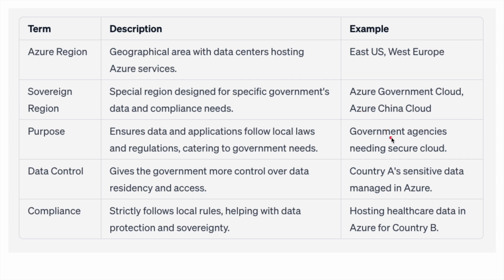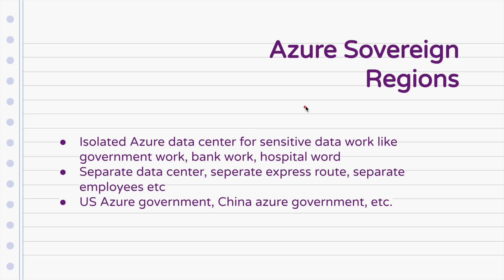This is for government agencies that need a secure cloud — maybe the FBI, the New York police department, Indian security services and whatnot. The data control gives the government more control over data residency and access, so sensitive data of a country is managed in Azure. Compliance means it strictly follows local rules, helping keep the data protected. If it needs level one of security, they ensure level one; if it needs level two, level two, level three and so on. In this manner, these sovereign regions are accessed.